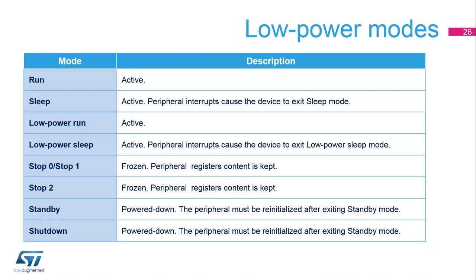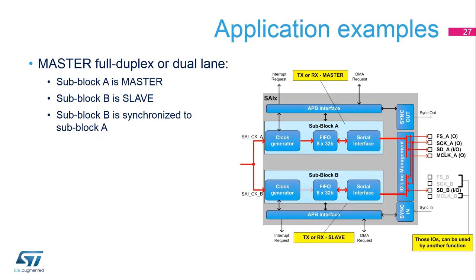The SAI needs the bus interface clock, or APB clock, and the kernel clock, or SAINCKX, to work properly. For a full-duplex master mode, two data lanes are needed, so two sub-blocks need to be used. The master sub-block A provides the synchronization to slave sub-block B using the internal synchronization feature, or I/O line management. Using internal synchronization, the number of I/Os required is reduced to its minimum.